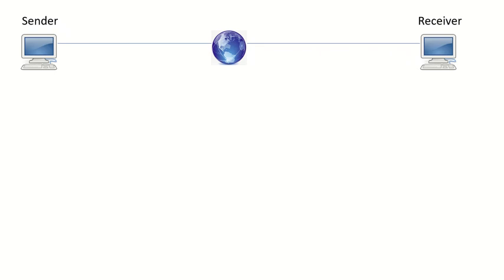Today we will be discussing the OSI model. OSI stands for Open System Interconnection. The OSI model is a theoretical stack of seven layers that we can use to understand how networks communicate. The seven layers from bottom to top are: Layer 1 - the Physical Layer, Layer 2 - the Data Link Layer, Layer 3 - the Network Layer, Layer 4 - the Transport Layer.